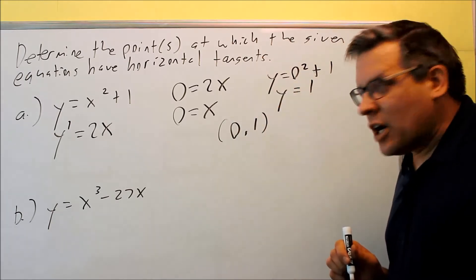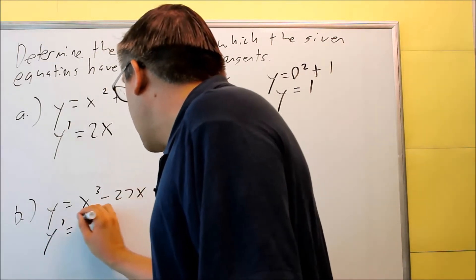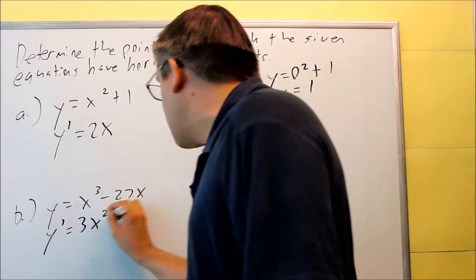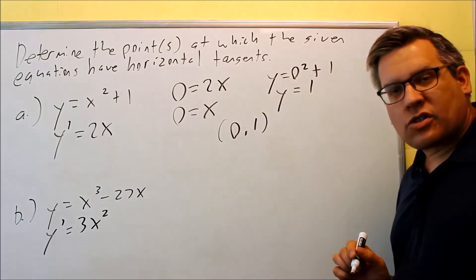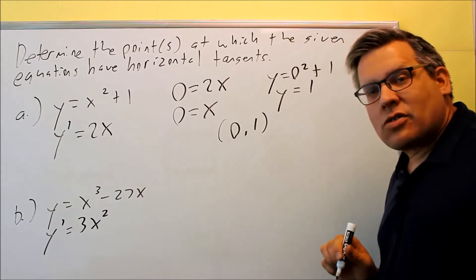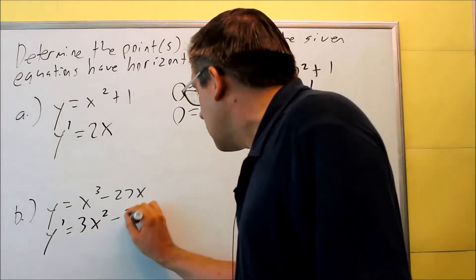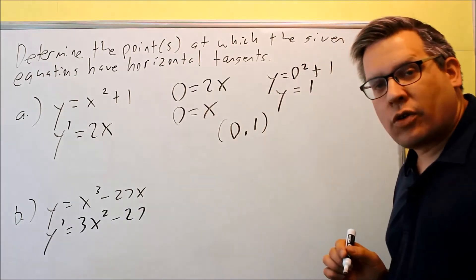Do the same thing for this bottom one. Take the derivative, 3 comes down, subtract 1 from the exponent, so you get 3x squared. Then we're going to take the derivative of the second one, we have a constant times x. Derivative of that would be just the constant out front, so you're going to get negative 27.